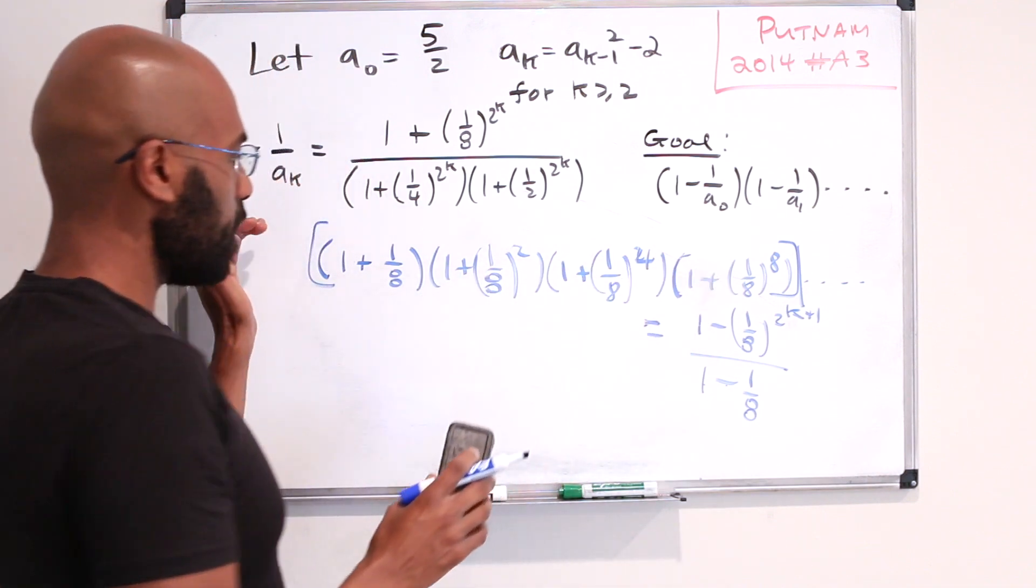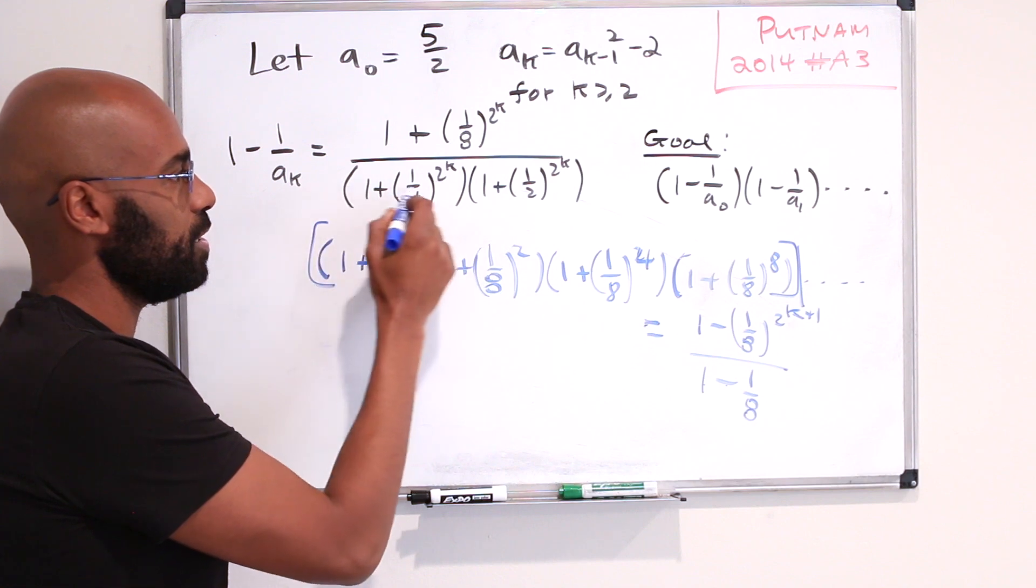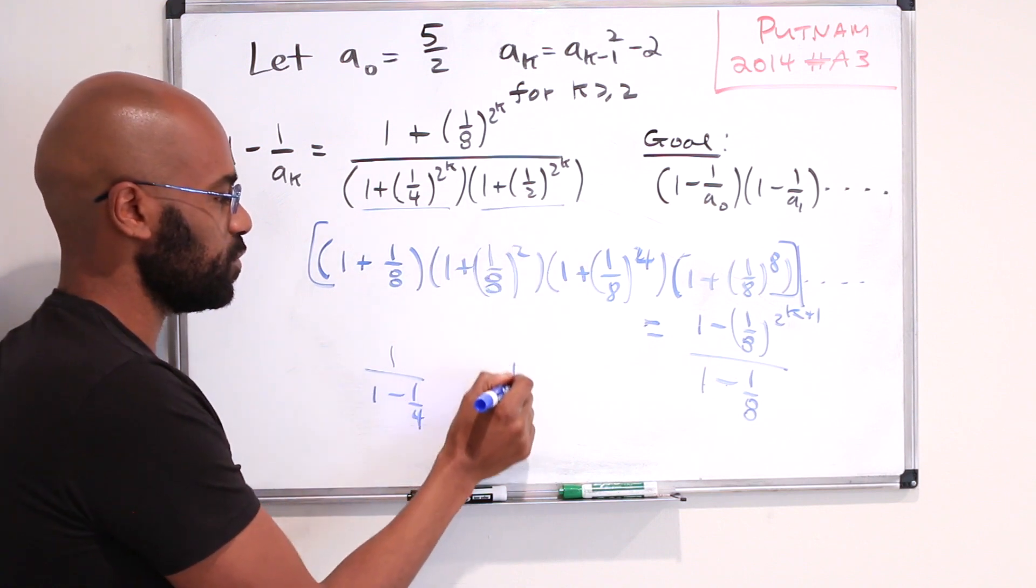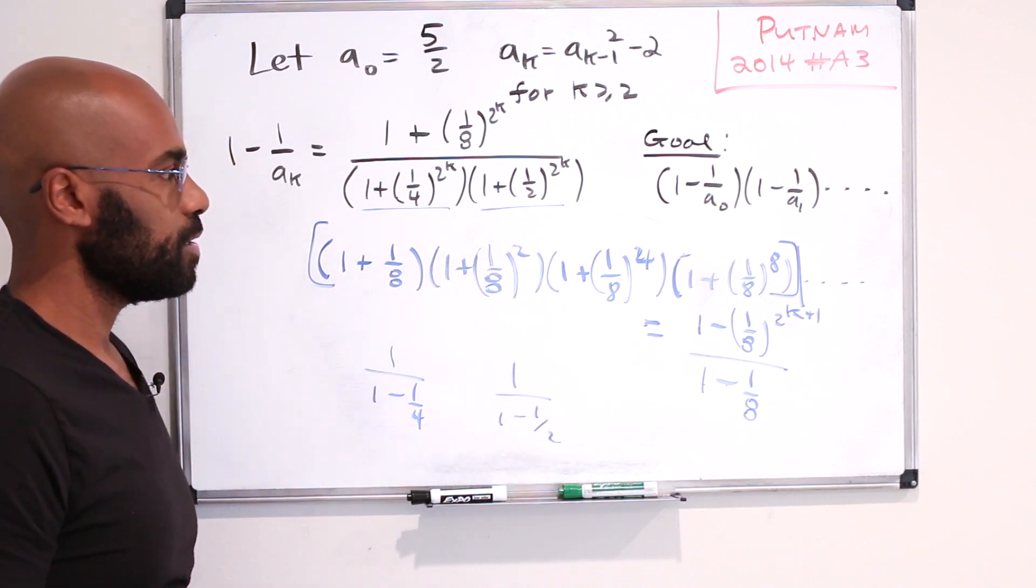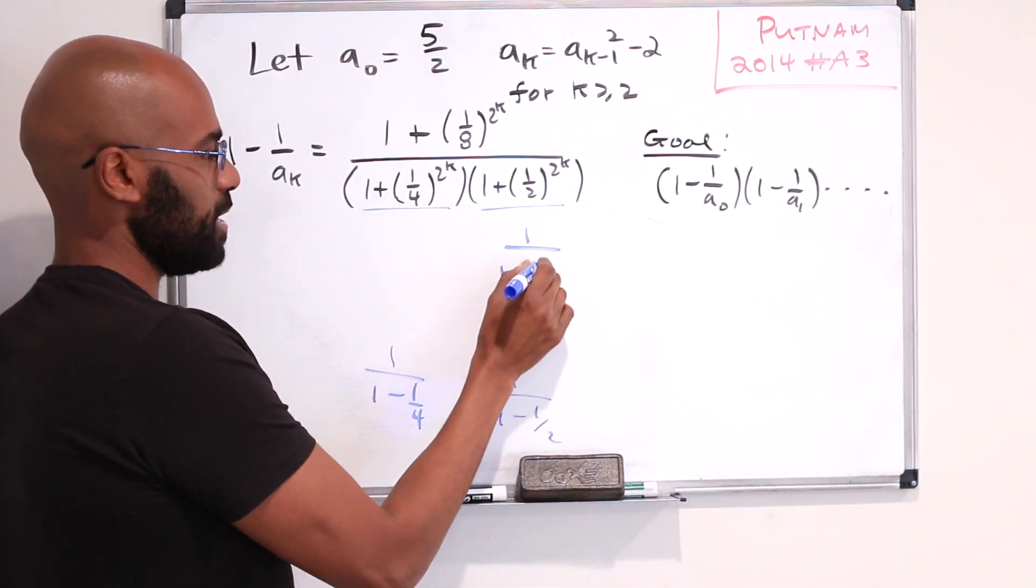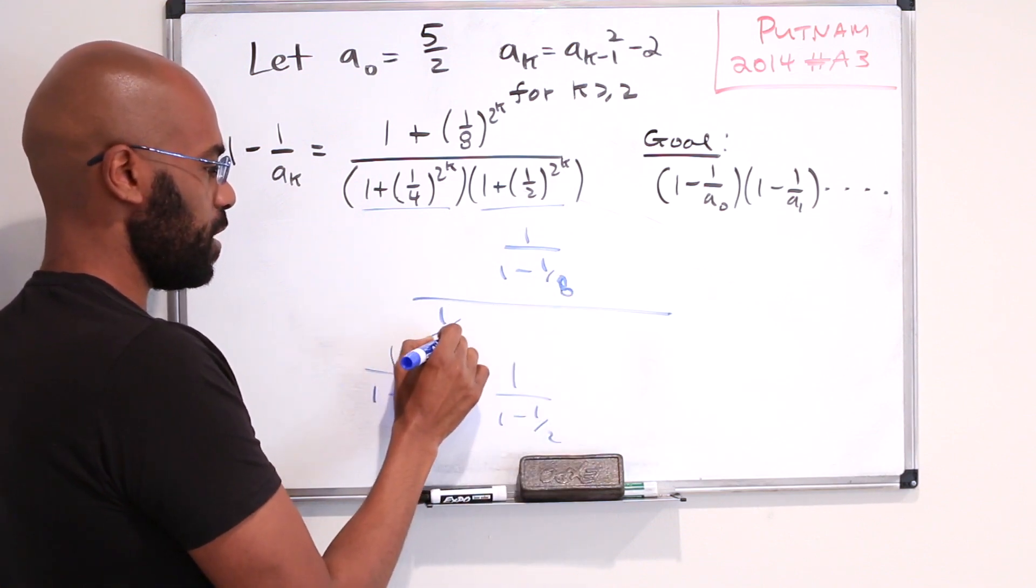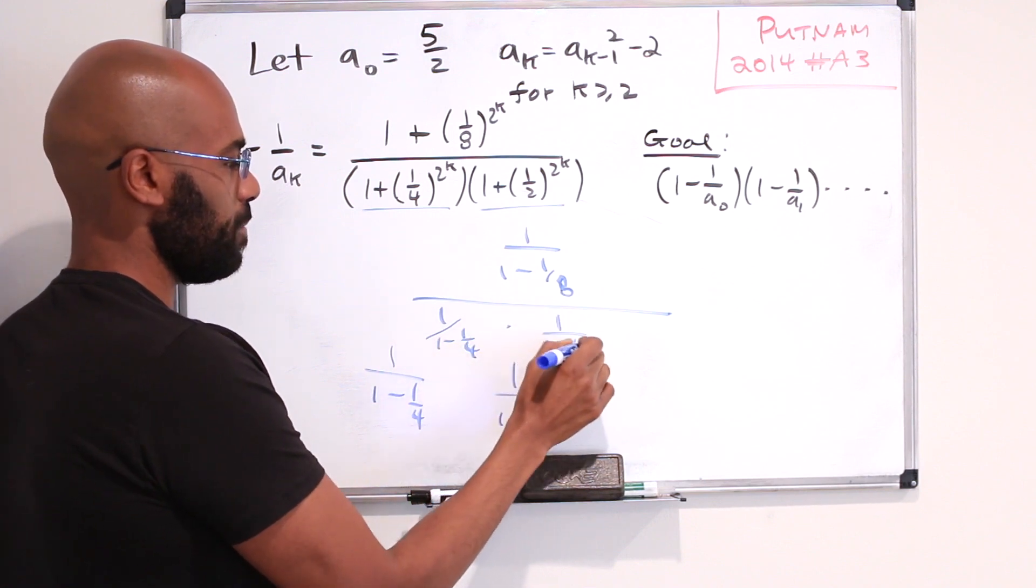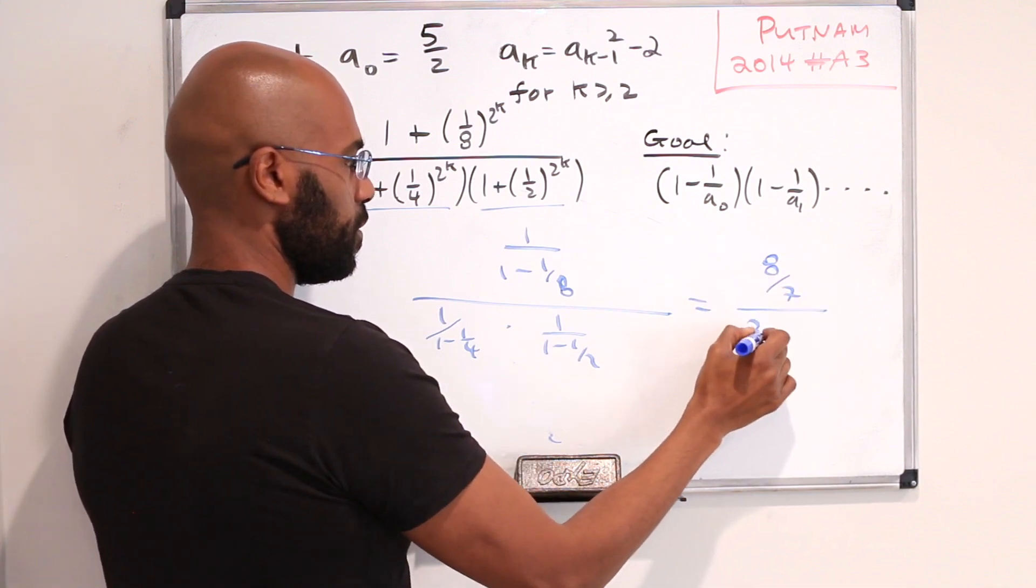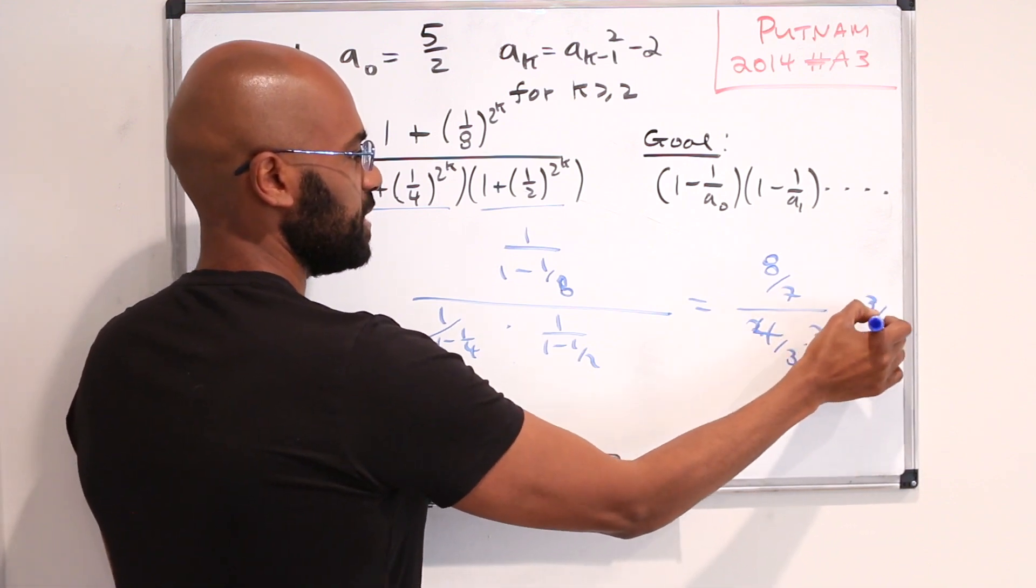So then if that's the contribution of this numerator, in a similar light, the contribution of this denominator in this product is 1 over 1 minus 1/4, and this one is 1 over 1 minus 1/2. So the entire product overall will be 1/(1 - 1/8) divided by 1/(1 - 1/4) times 1/(1 - 1/2). And that works out to 8/7 over 4/3 times 2, which is 3/7.